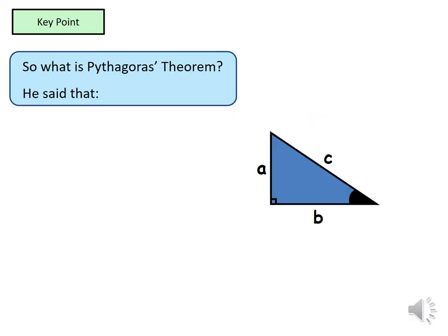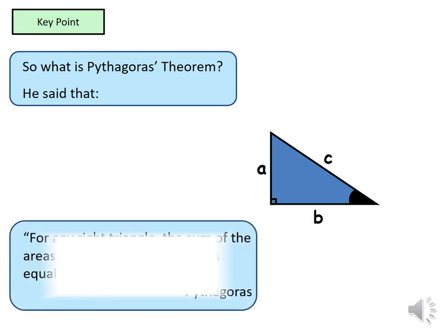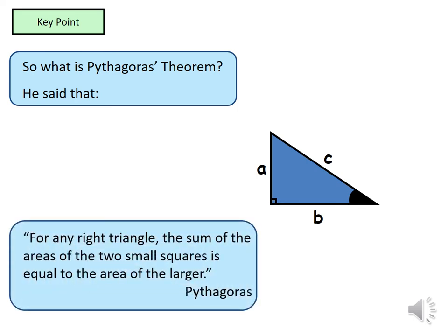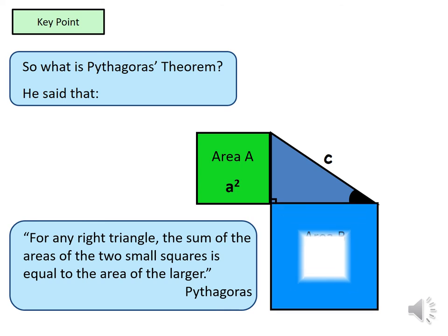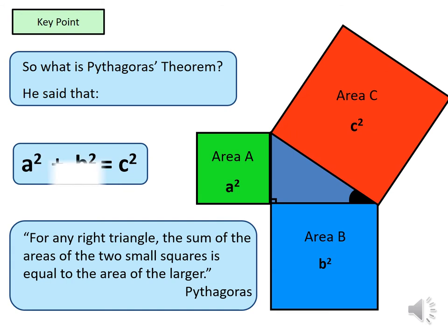A quick reminder of what Pythagoras' Theorem is. Pythagoras states for any right-angled triangle, the sum of the areas of the two small squares is equal to the area of the larger one. So, the length squared of area A and the length squared of area B, if you add them together, will give you the length of area C squared. Essentially we get the formula A squared plus B squared equals C squared.